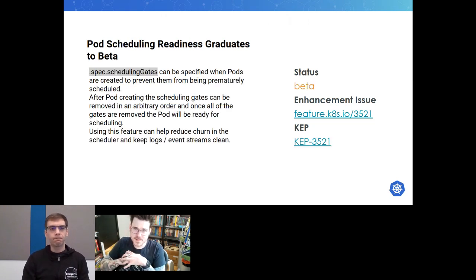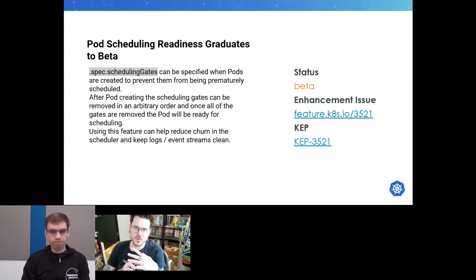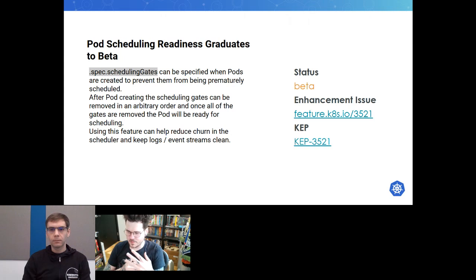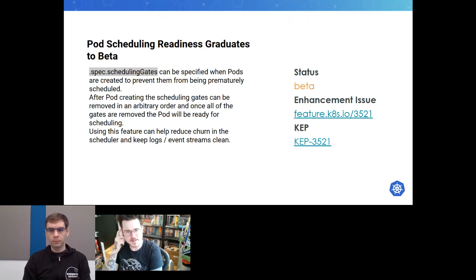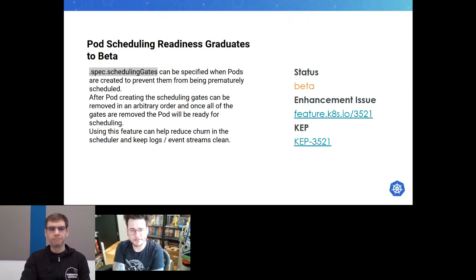Pod scheduling readiness is graduating to beta — a pretty cool one. You can add readiness gates to pods before they're scheduled. If you have labels, annotations, or any mutations that need to be applied to a pod, you can set a gate to do that work before scheduling, avoiding the churn of the scheduler and ensuring pods are in their fully mutated state before they reach that stage. This should be useful to a lot of people.